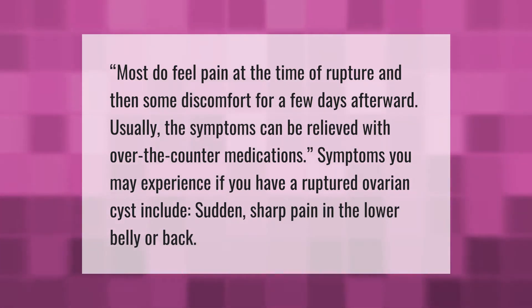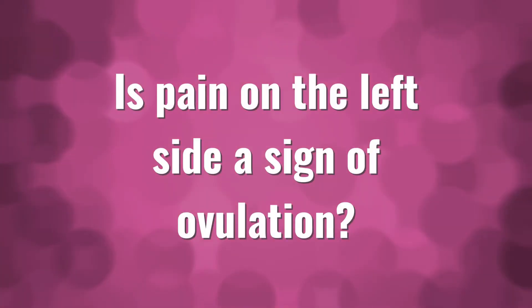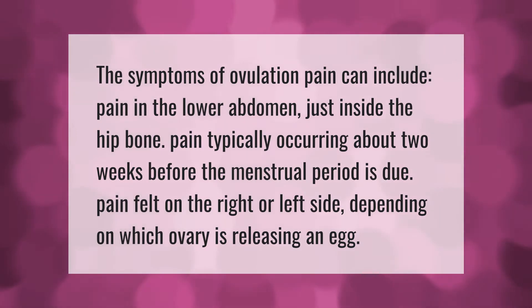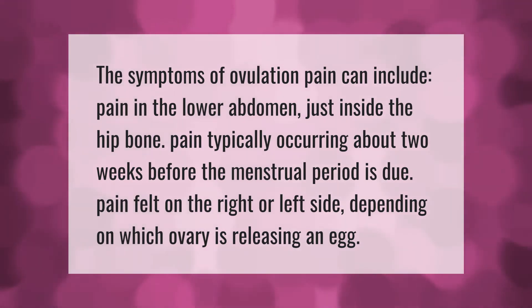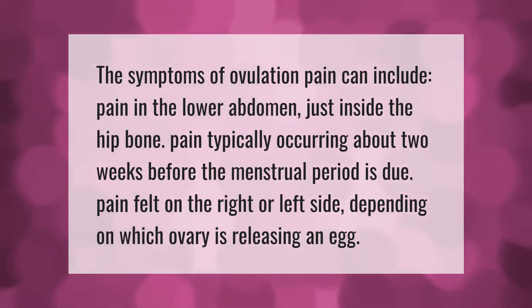The symptoms of ovulation pain can include pain in the lower abdomen just inside the hip bone, pain typically occurring about two weeks before the menstrual period is due, and pain felt on the right or left side depending on which ovary is releasing an egg.